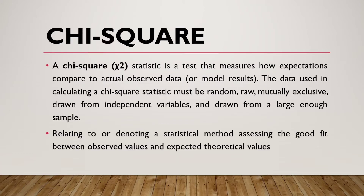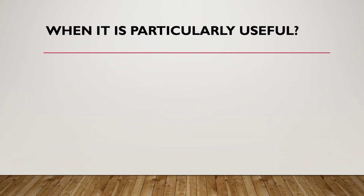So what is chi-square? The chi-square statistic is a test that measures how expectations compare to actual observed data or model results. The data used in calculating the chi-square statistic must be random, raw, mutually exclusive, drawn from independent variables, and drawn from large enough samples, relating to a statistical method assessing the goodness of fit between observed values and expected theoretical values.